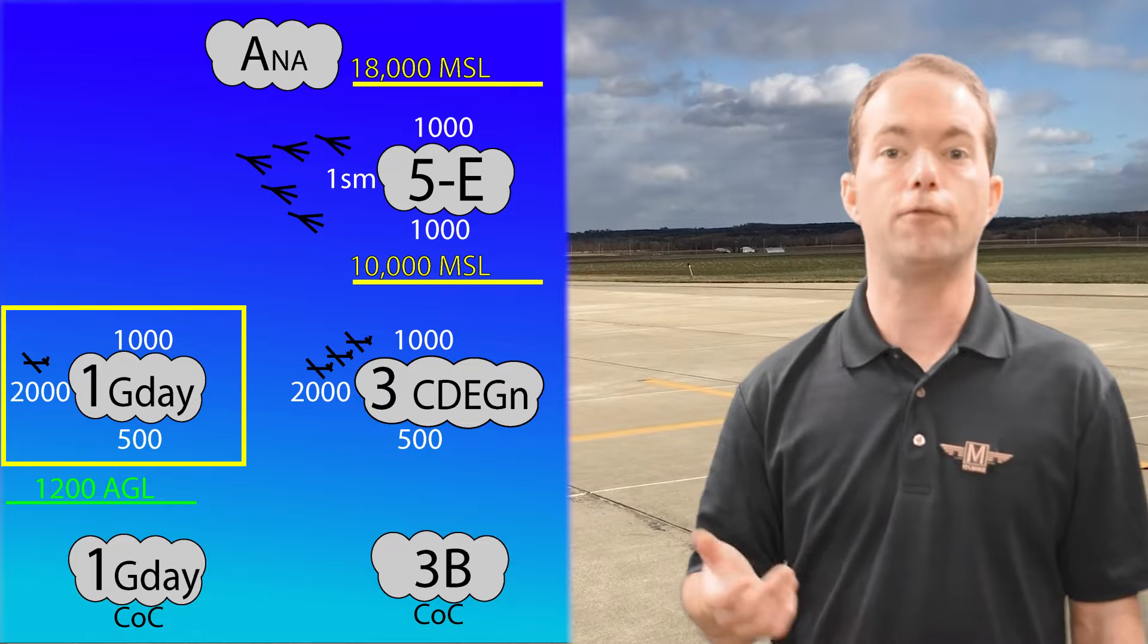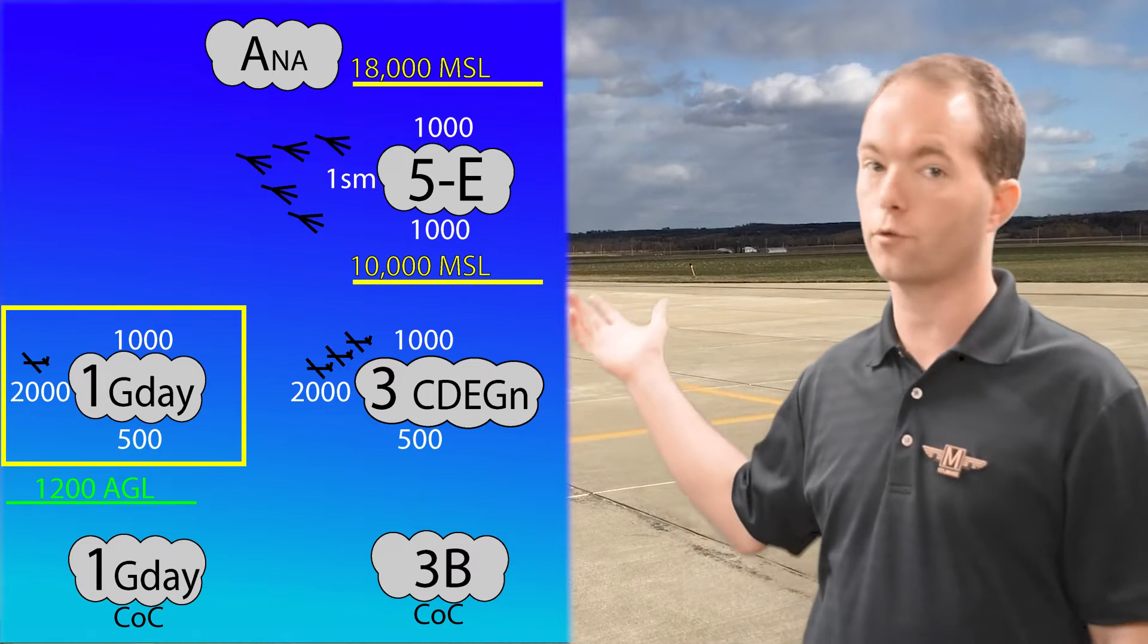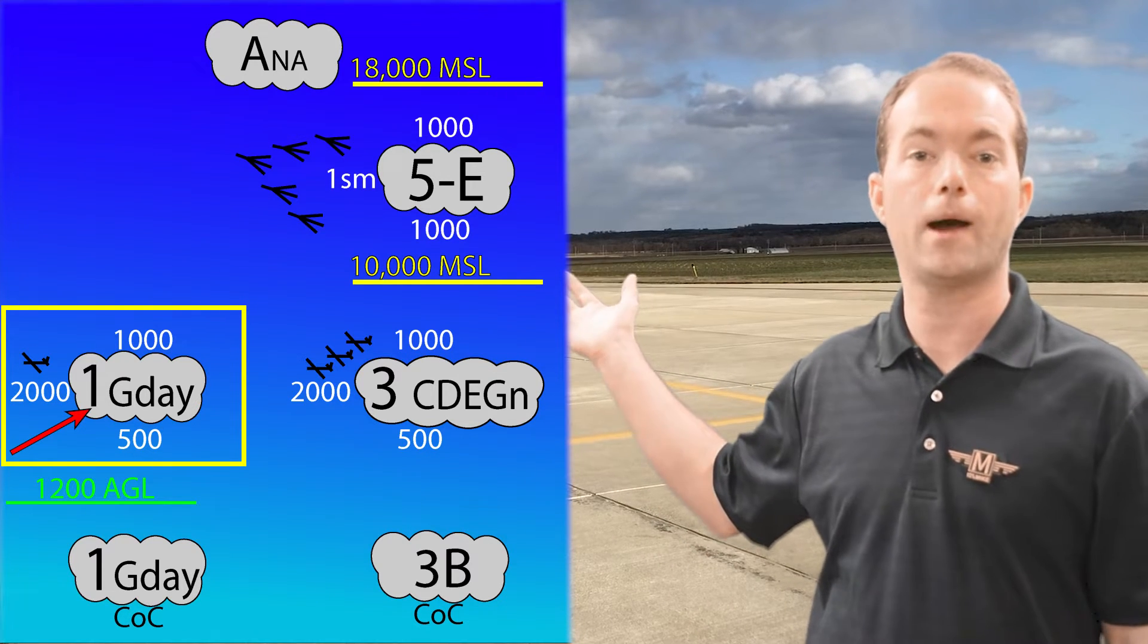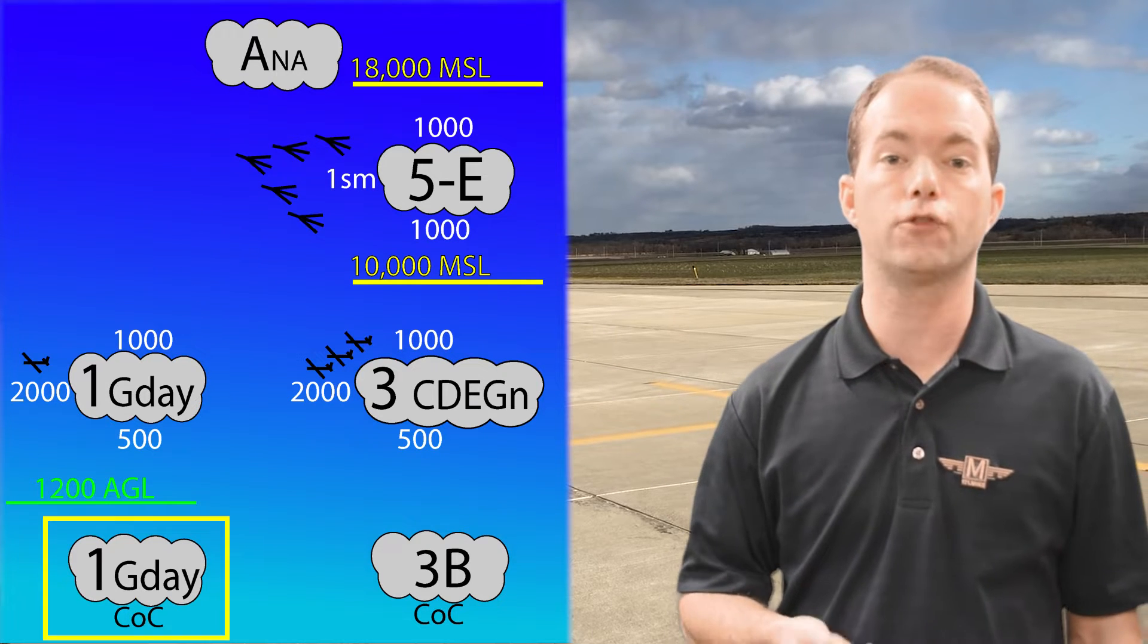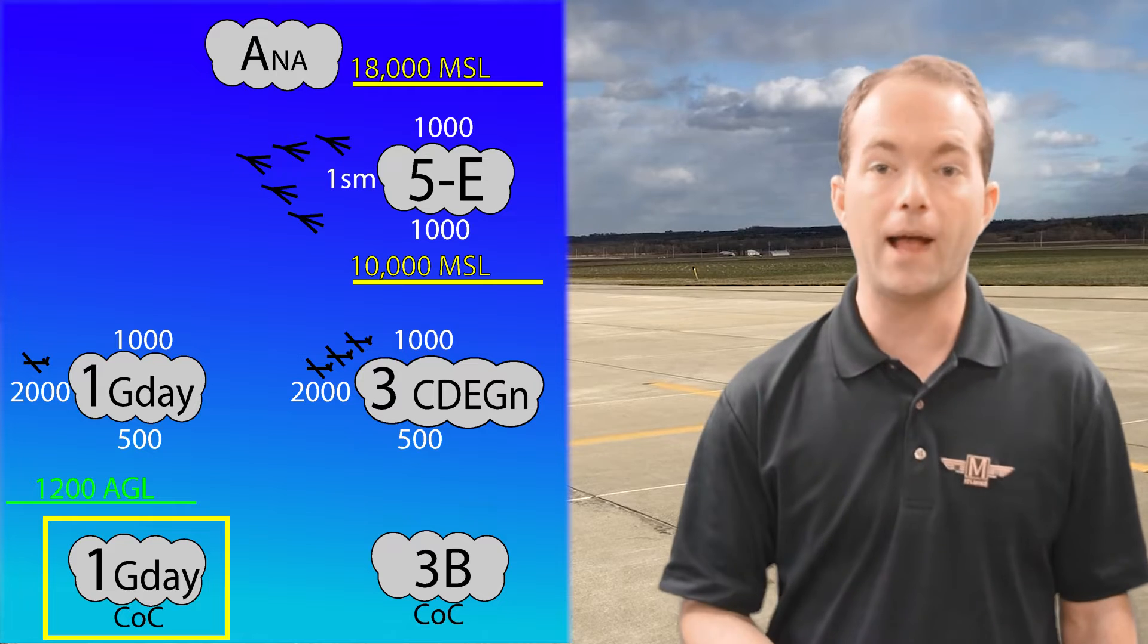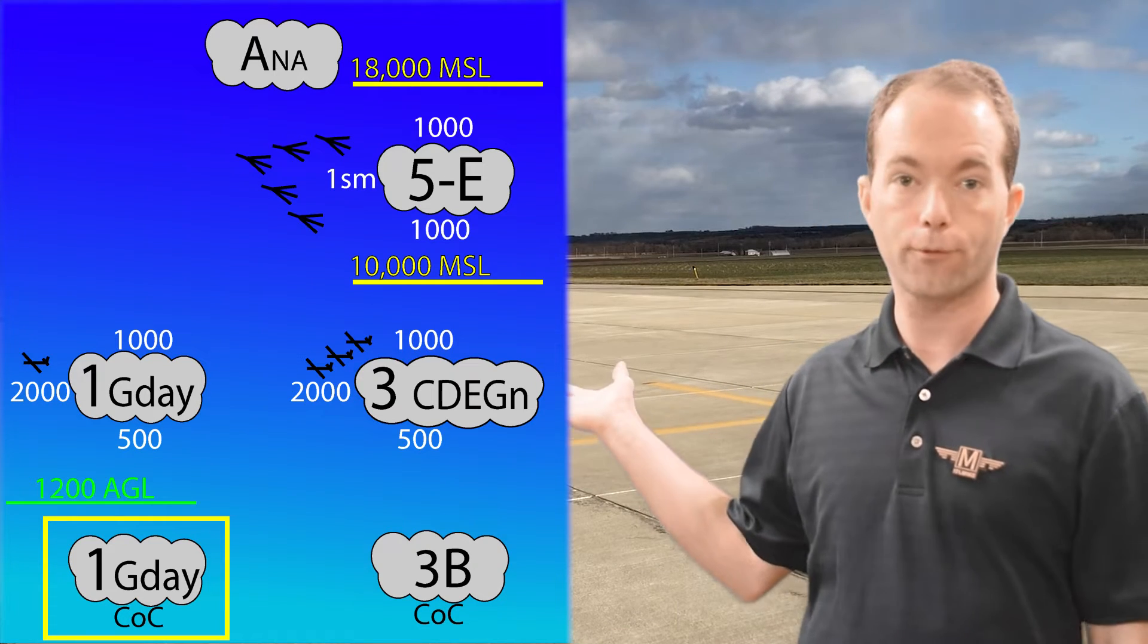Now, G during the day above 1,200 AGL has the same clearance requirements, but you're only going to need a mile visibility. And if you're below 1,200 AGL during the day in class G, you just need to be clear of the clouds, which means don't fly through them.